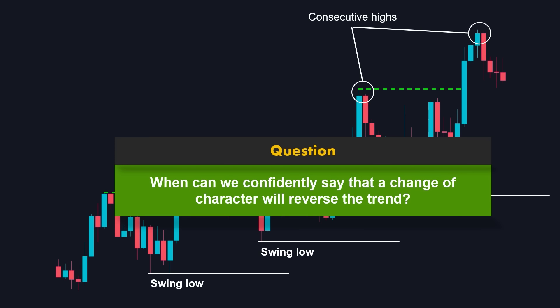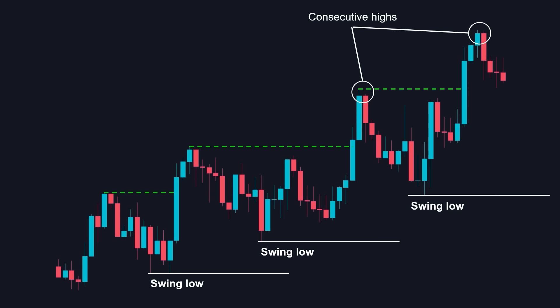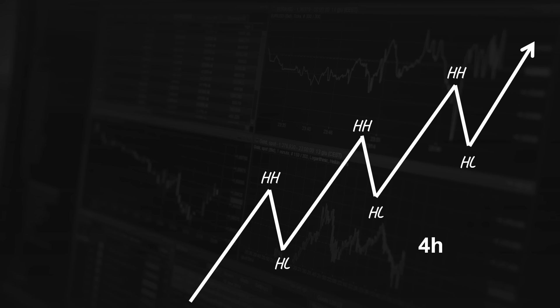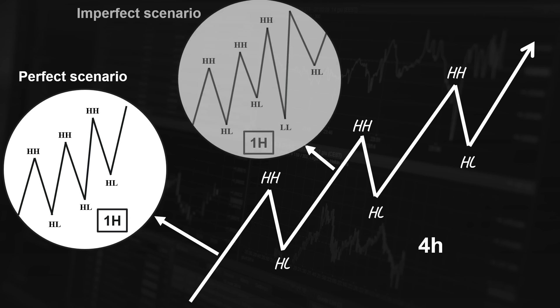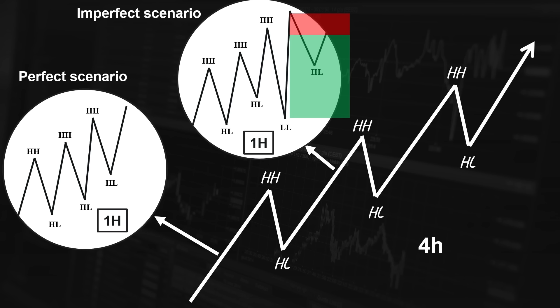When can we confidently say that a change of character will reverse the trend? To answer this question, you need to understand the factual nature of the market. Imagine we have an obvious uptrend on the 4-hour timeframe with a series of impulsive and corrective moves. The market continuously makes new higher highs and respects the higher lows. If you zoom into the 1-hour timeframe, you will notice that this 4-hour impulse wave consists of impulsive and corrective moves. However, in the imperfect scenario, the price will create fake breakouts before pushing to the upside to develop higher highs. When most traders see these fake breakouts, they assume that the price will reverse and go short in the supply zone, only to get stopped out. If you have in-depth knowledge of market structure, you will realize that since the higher timeframe is in an obvious uptrend, you will avoid this move and instead find a demand zone and go with the dominant uptrend.